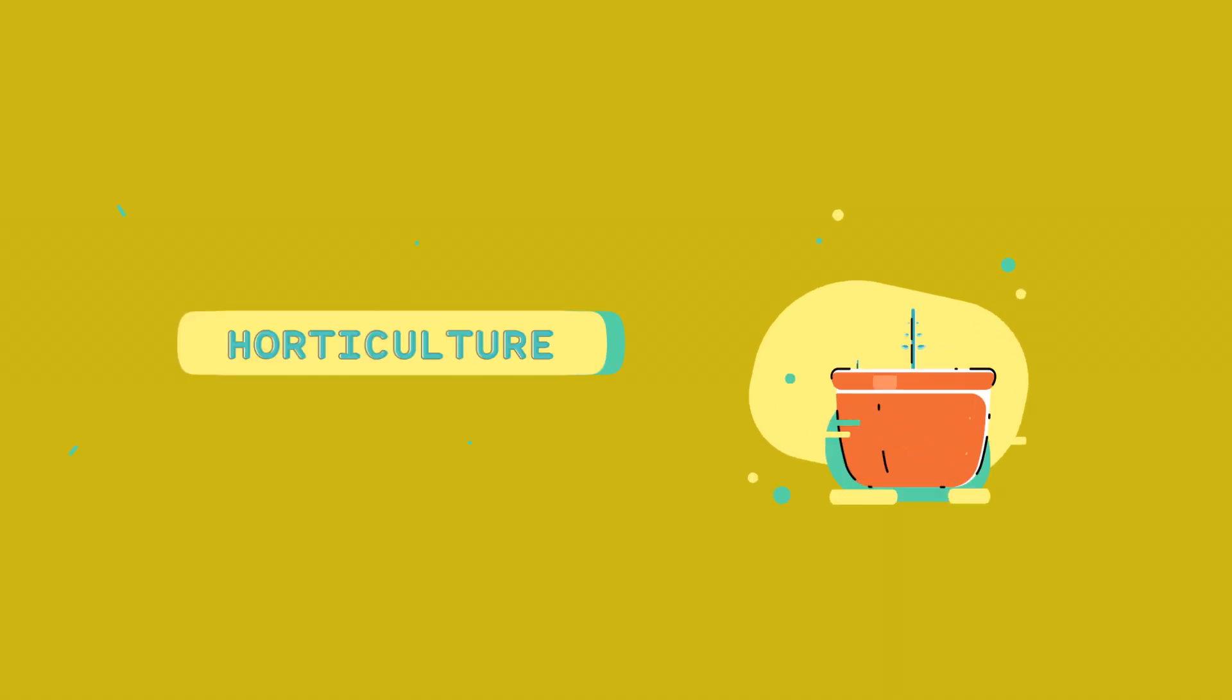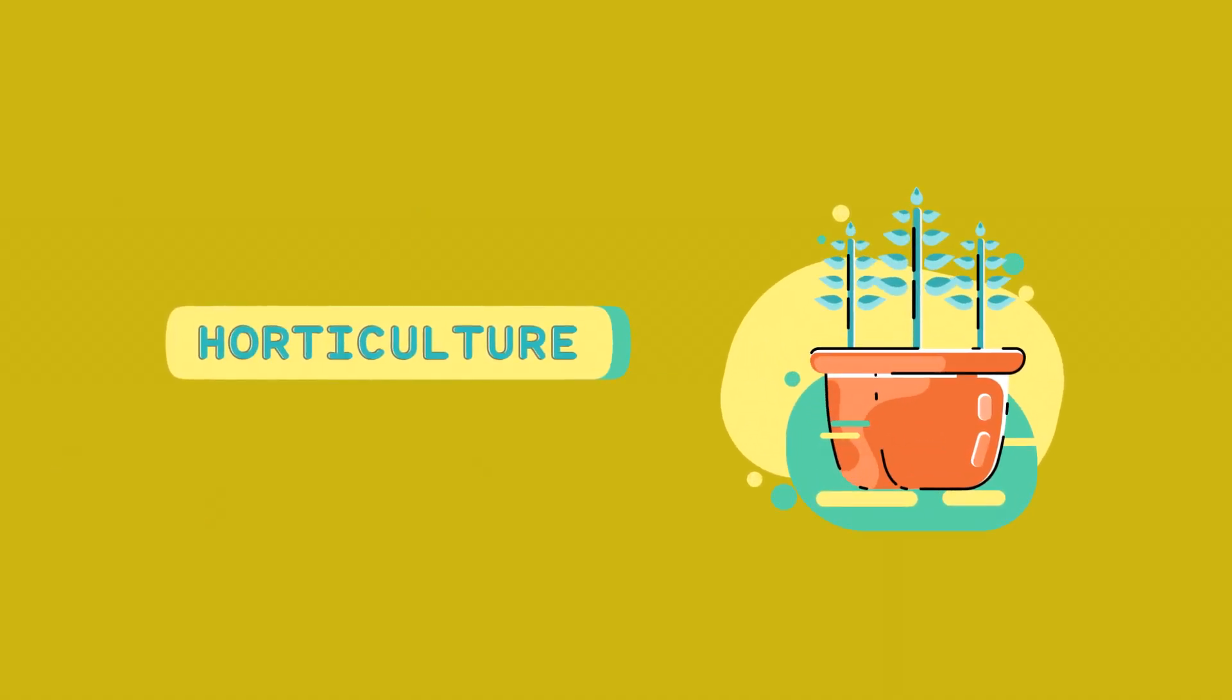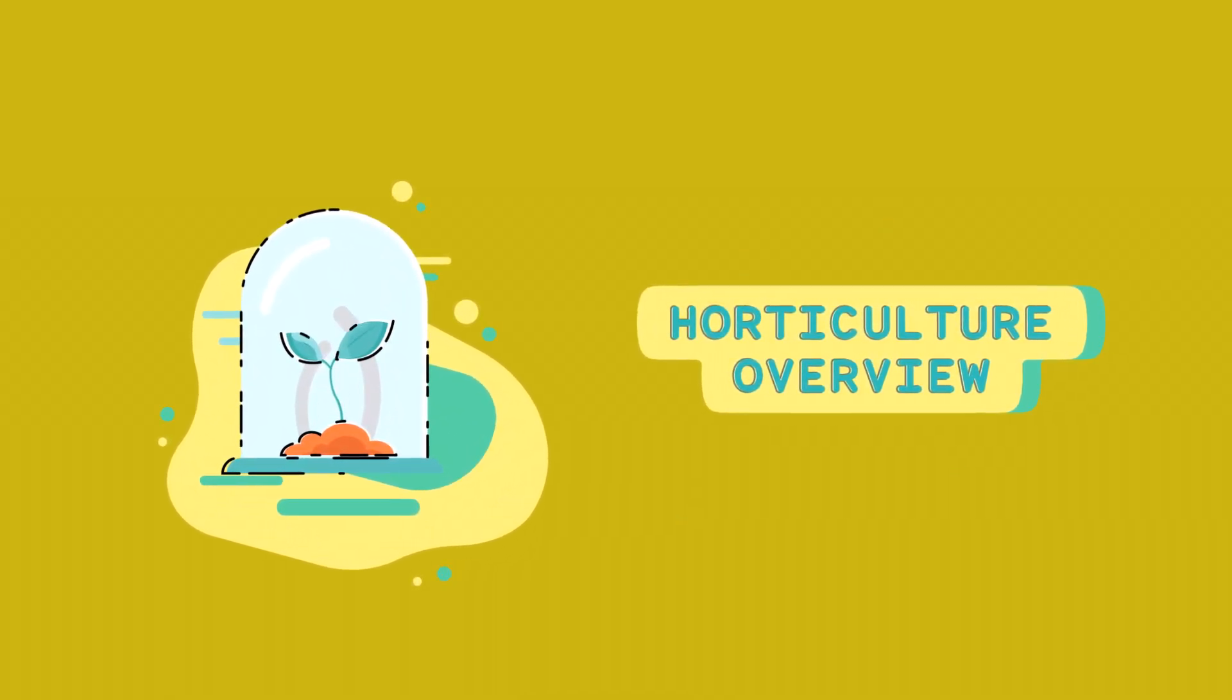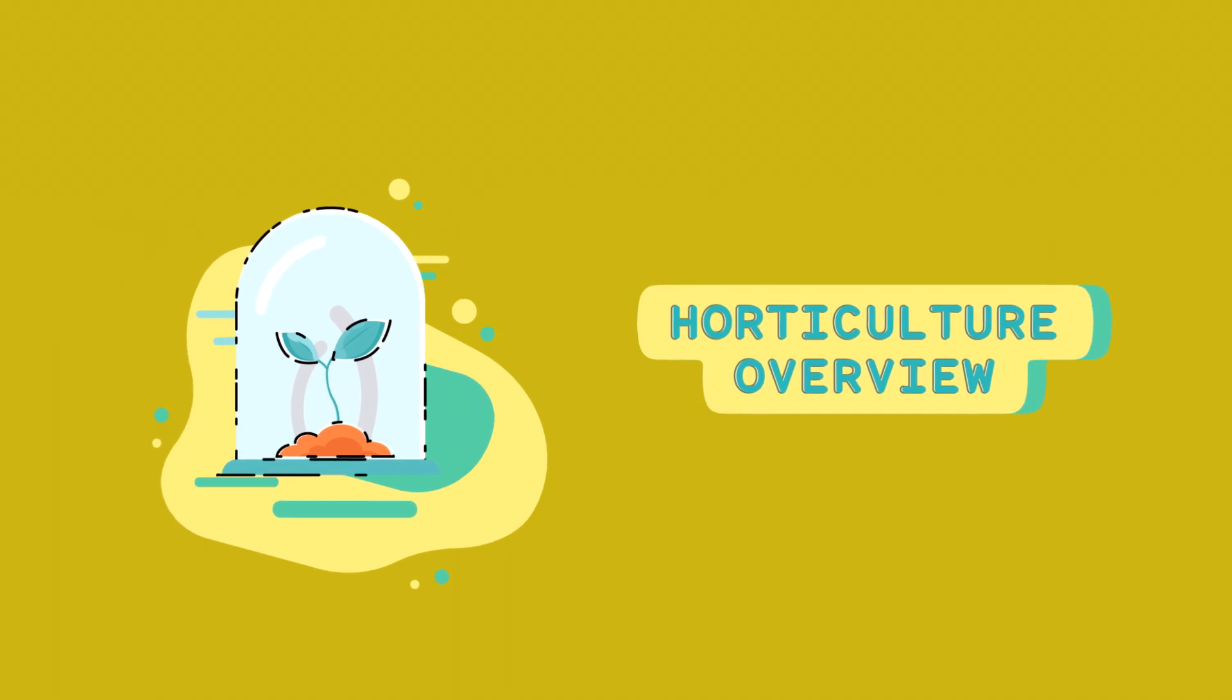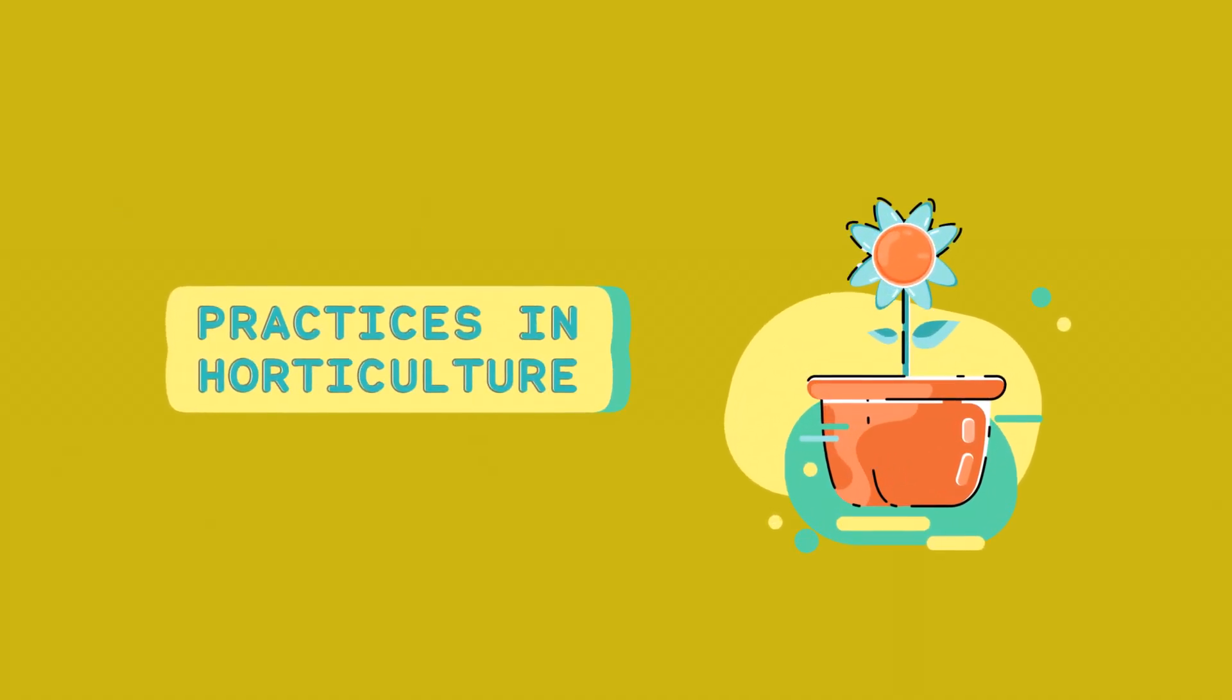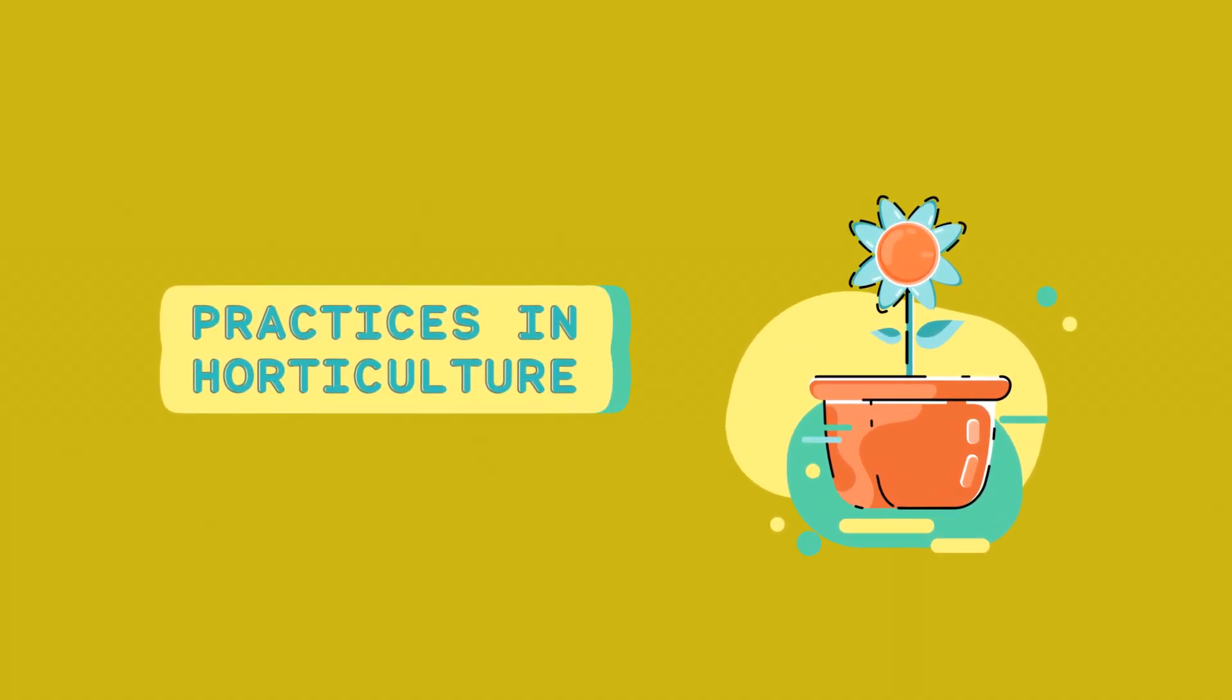Horticulture: The Cultivation of Plants for Ornament and Utility. Horticulture is a more specialized field that focuses on the cultivation of plants for ornamental purposes or for specific uses. It involves a variety of practices, including gardening, landscaping, and floriculture.